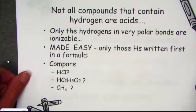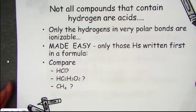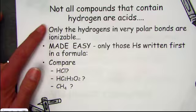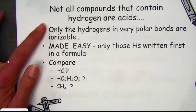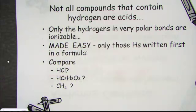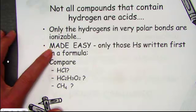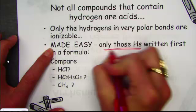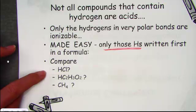Arrhenius gave us the definition that all acids start with an H, and if they start with an H, we recognize those to be ionizable hydrogens. But remember, not all hydrogens are considered acid hydrogens. Not all compounds that contain the element hydrogen are considered to be acidic. Only those hydrogens that are in very polar bonds are ionizable — that break apart and form acid ions known as H⁺. If you see a hydrogen written first in the formula, we know it to be acidic. If it's buried anywhere else in the formula, they are not acid hydrogens.